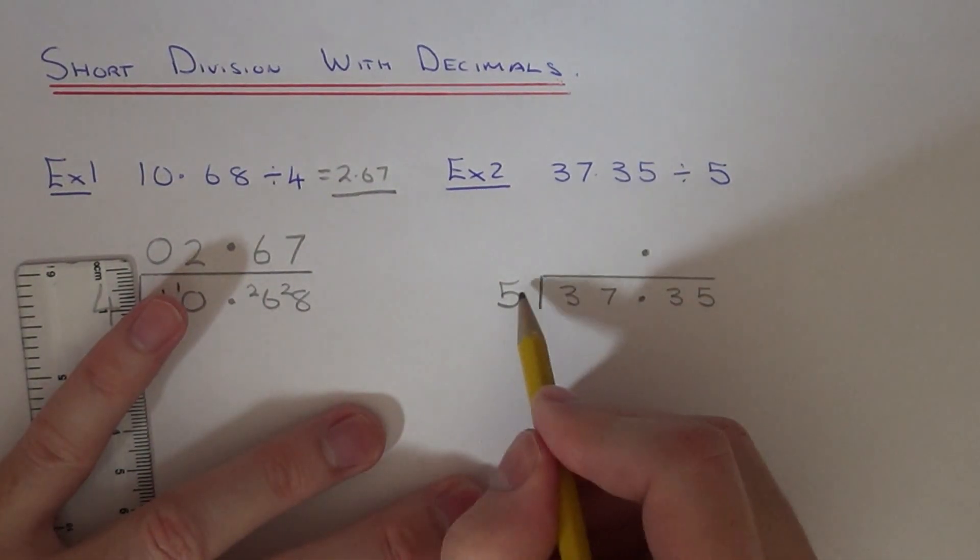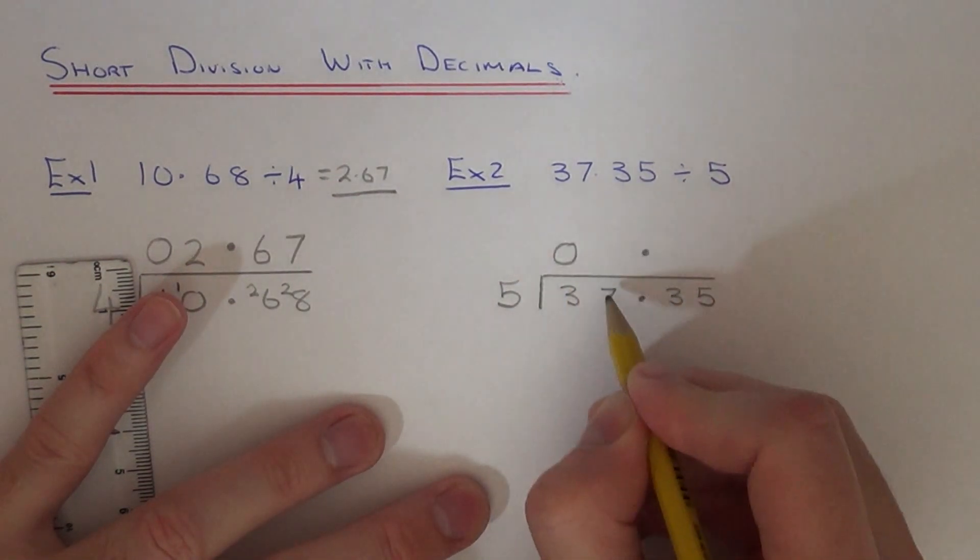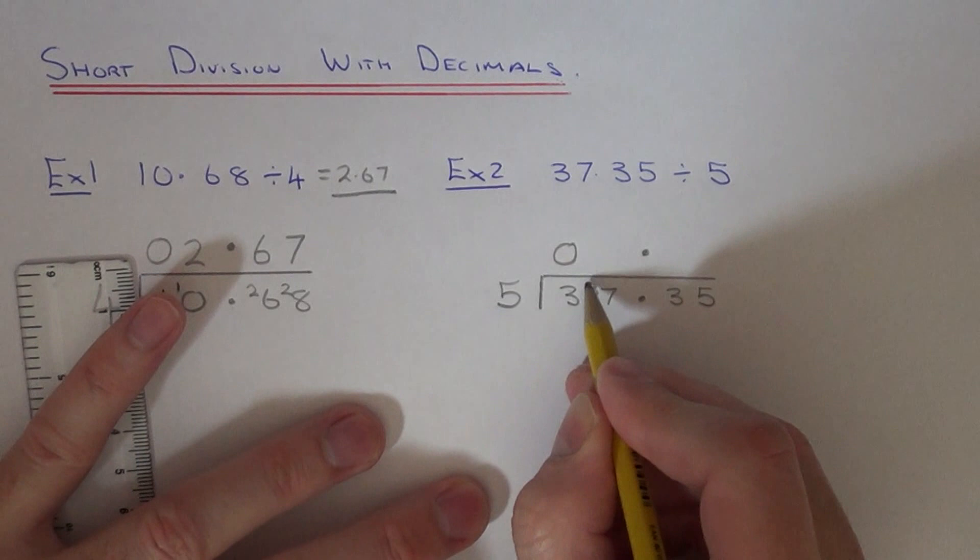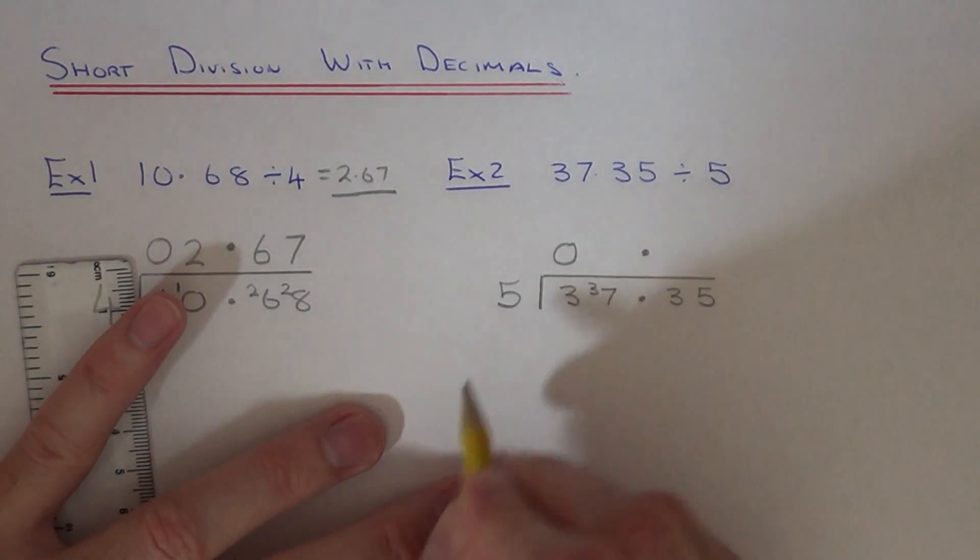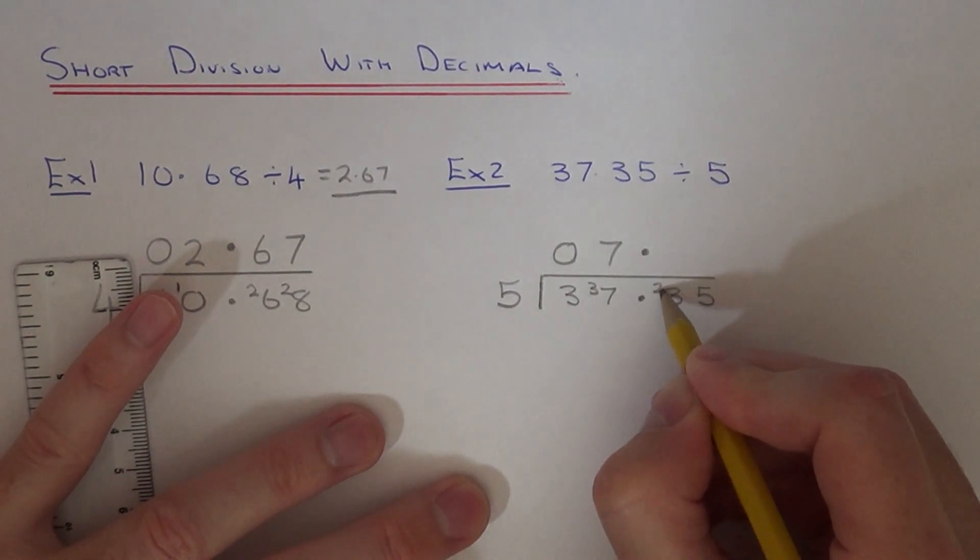First of all, you've got to do 3 divided by 5. Again that doesn't work, so it's 0 remainder 3. Now we've got 37, so it's 37 divided by 5. That is 7 with a remainder of 2.